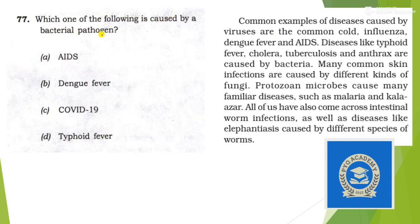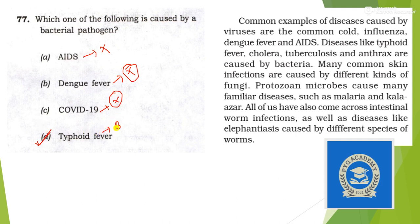Next: which one of the following is caused by a bacterial pathogen? AIDS is caused by a virus — eliminate. Dengue is also caused by a virus. COVID-19 is already known to be a virus. Then typhoid fever — this is the answer because typhoid is caused by bacteria. You can find this in chapter 13 of class 9.